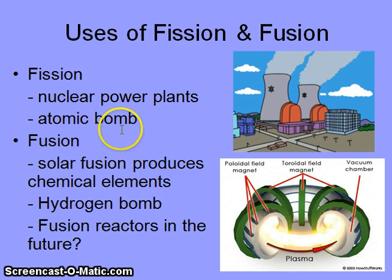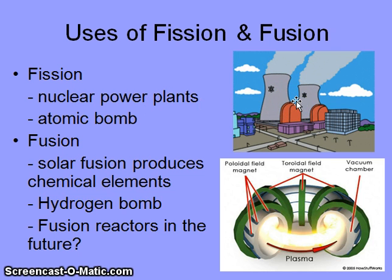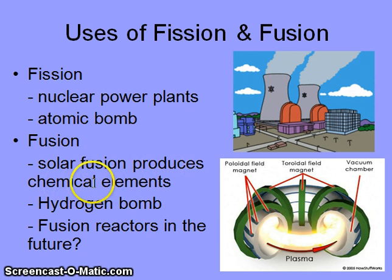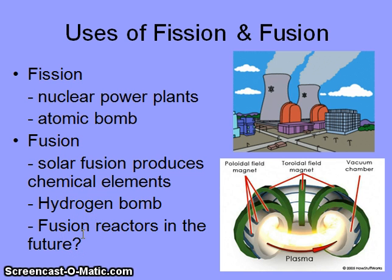Fission has been used to produce atomic bombs and is the reaction utilized in nuclear power plants. In a nuclear power plant, fission reactions produce energy that heats water, generating steam that drives turbines to generate electricity. Fusion reactions are responsible for solar fusion, which produces chemical elements. Fusion was also used to produce the hydrogen bomb. Perhaps someday nuclear reactors will use fusion instead of fission, which could result in nuclear power that doesn't produce as many long-lasting radioactive wastes.